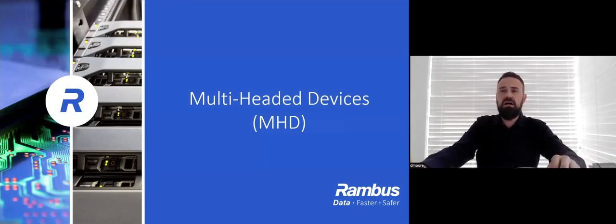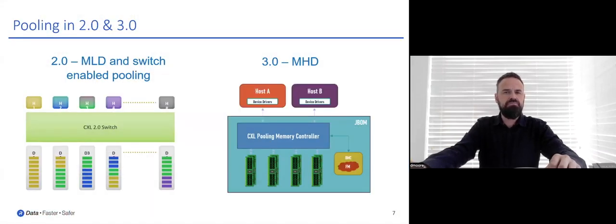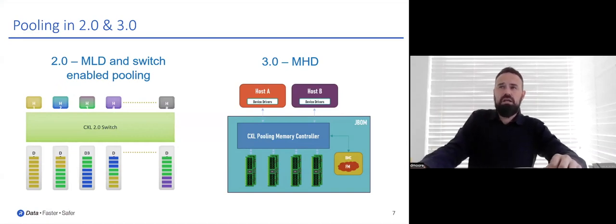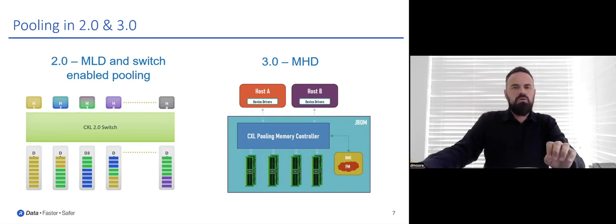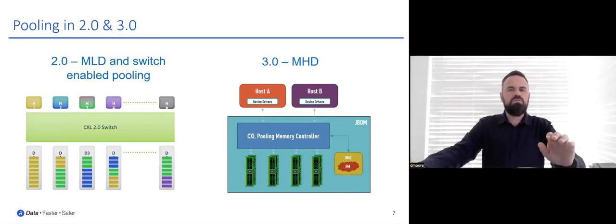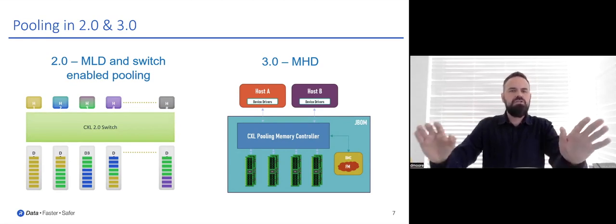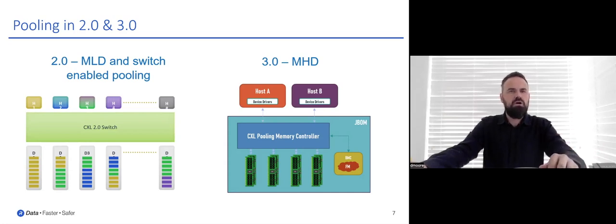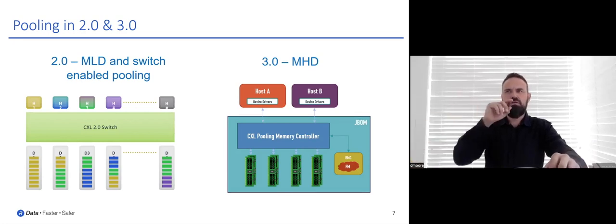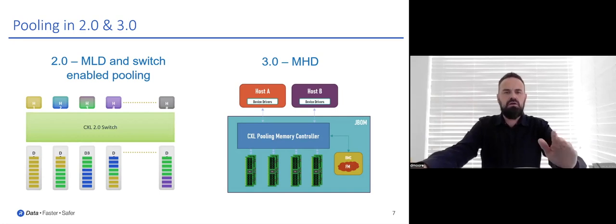Let's jump into some of these new novel device types — the multi-headed devices. Here's a quick review of memory pooling in 2.0 and 3.0 with the new multi-headed device or MHD concept. Pooling is not new to 3.0. With 2.0, we brought the pooling concept with switches and multiple logical devices or MLDs. But the MHD brings new optimizations. In 2.0, single or multiple logical device pooling was enabled with CXL switches, where resources can be assigned dynamically to different host domains. In 3.0, we introduced the multi-headed device, which eliminates the need for a physical switch to implement the pooled memory solution, providing performance benefits as flits are no longer required to traverse the CXL link, and improvements in device composability as well.